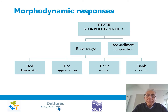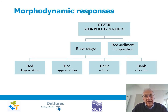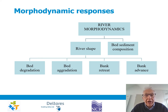River morphodynamics regards river shape and bed sediment composition. River shape is a matter of bed topography — the bed can go down, which is bed degradation by erosion, or the bed can go up, which is aggradation by sedimentation. Another aspect of shape is what you see from the air: the plan form, the pattern of bank lines. Bank lines can retreat by erosion, or they can advance by accretion, growth, or floodplain formation.